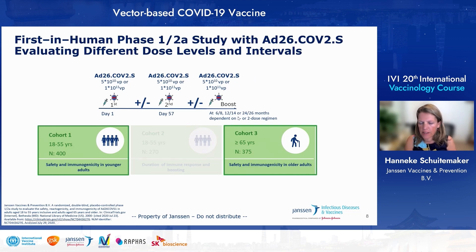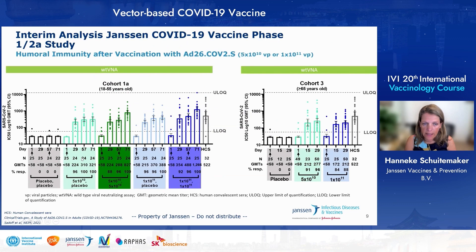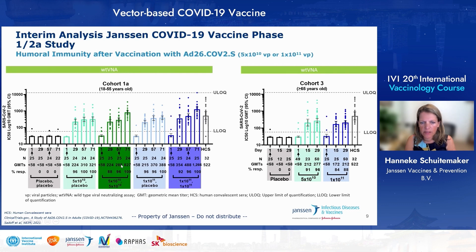In the phase one/two study, we enrolled younger adults aged 18 to 55 years and older adults above 65 years of age, and tested the immunogenicity of a single dose of Ad26.COV2.S at 5×10^10 or 1×10^11 virus particles, or a two-dose regimen with an eight-week interval. After a single dose, we see very nice neutralizing antibody responses detectable four weeks after vaccination that are very stable up to day 71. The second dose eight weeks later further increases the neutralizing antibodies. The dose selected for phase three studies was 5×10^10 virus particles, as the higher dose did not show meaningfully higher immune responses.